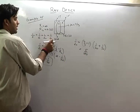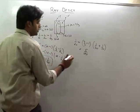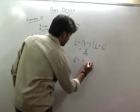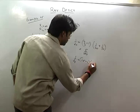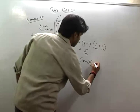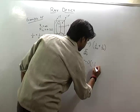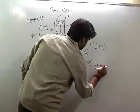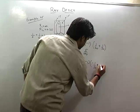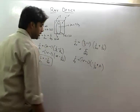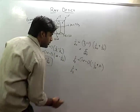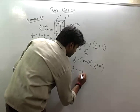Similarly, for lens 3: 1/f3 = (1.5 - 1) × (1/r1 - 1/r2), where r1 = -30 and r2 = infinity. So 1/f3 = (0.5) × (1/(-30) - 0) = -1/60. So 1/f3 = -1/60.